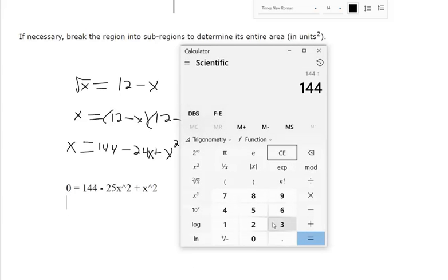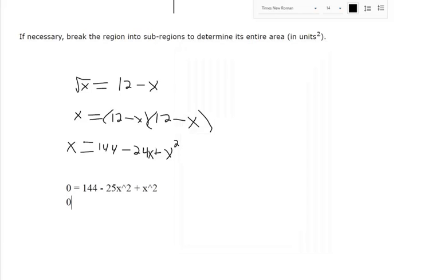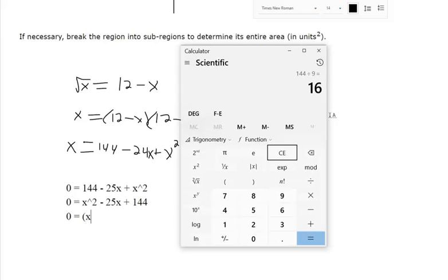I might need to do a quadratic formula. Oh no, 9 and 16. This is the same thing, just rearranged the order. It should be x squared. So we need two numbers that multiply to be 144, but add to be negative 25, so I think I just found it to be 9 and 16.